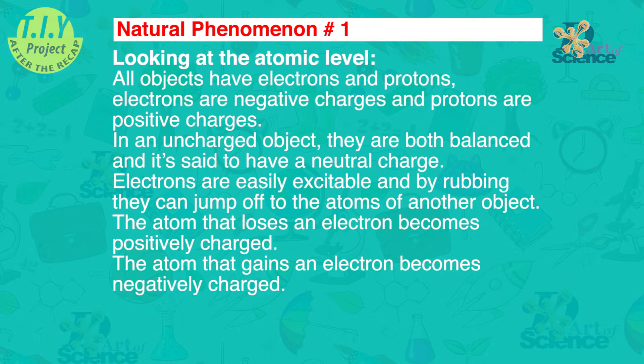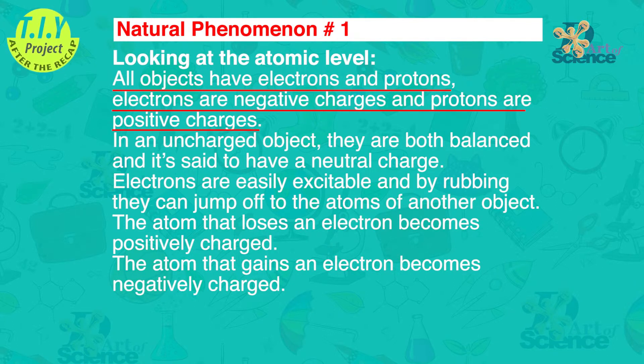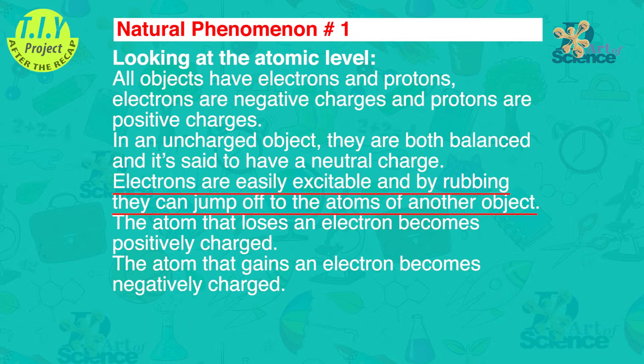Looking at the atomic level, all objects have electrons and protons. Electrons are negative charges and protons are positive charges. In an uncharged object, they are both balanced and it is said to have a neutral charge. Electrons are easily excitable and by rubbing they can jump off to the atoms of the other object.